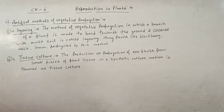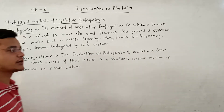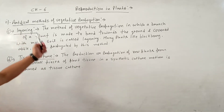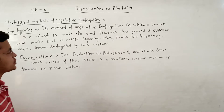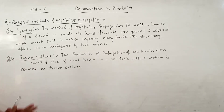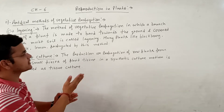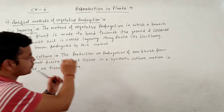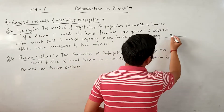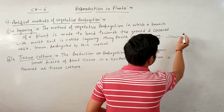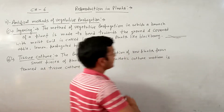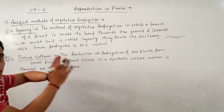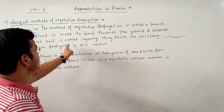Students, now we will discuss about another artificial method of vegetative propagation: layering. In layering, the method of vegetative propagation in which a branch of plant is made to bend towards the ground. Plant की एक branch soil में ground हो जाएगी. And after some time, covered with moist soil, इसे हम layering कहते हैं.